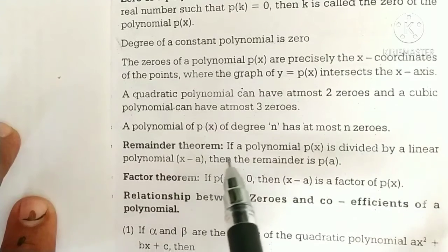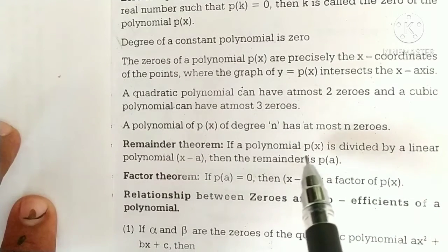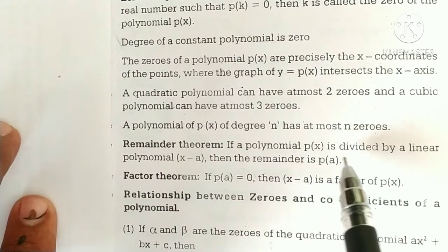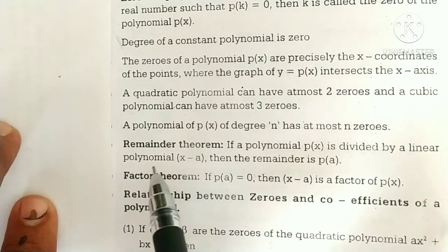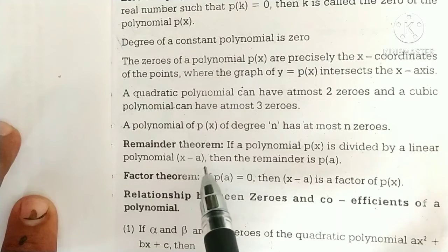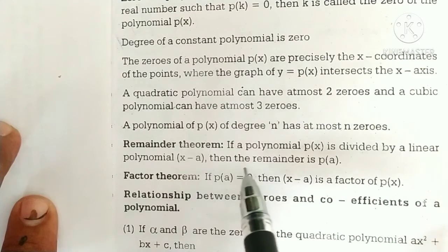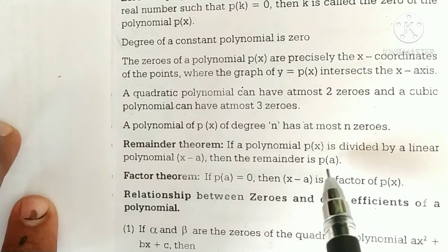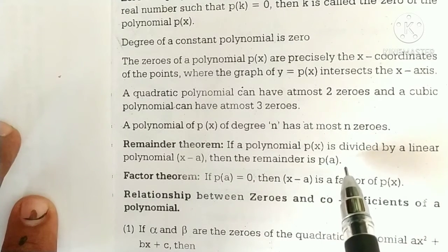Remainder theorem: if a polynomial p of x is divided by a linear polynomial x minus a, then the remainder is p of a.